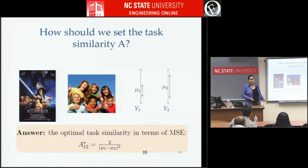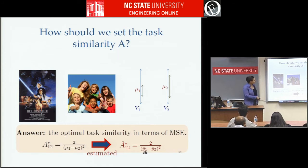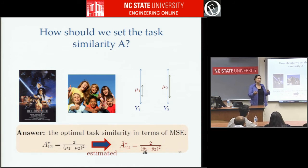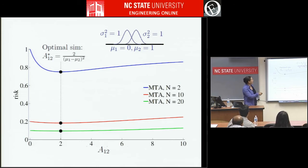How should we set the amount of regularization? We can analytically find the optimal amount — the optimal task similarity to get mean squared errors down as far as possible. The optimal regularization turns out to be 2 over the squared difference of the means. The closer the means are, the harder we can regularize. Because we don't really know the true means, in practice we estimate this using the sample averages themselves: we get the sample averages, use them to decide how much regularization to use, then re-compute our estimates. The sensitivity analysis shows that with fewer samples you're more sensitive to getting that right, and with more samples it matters less.